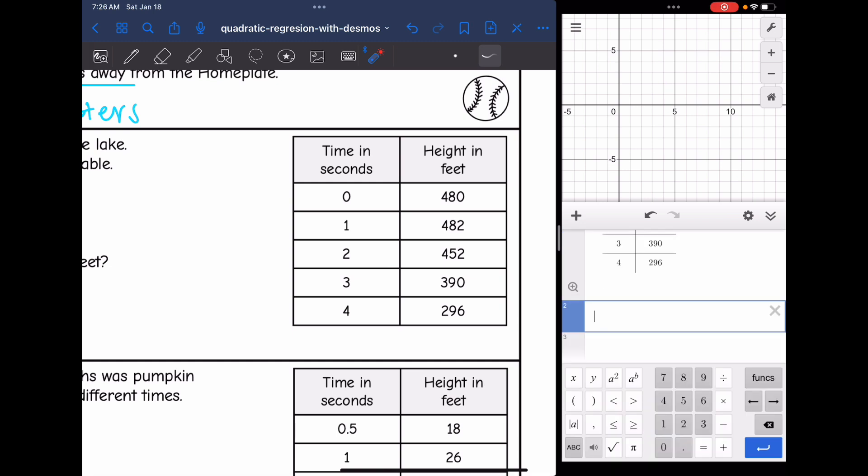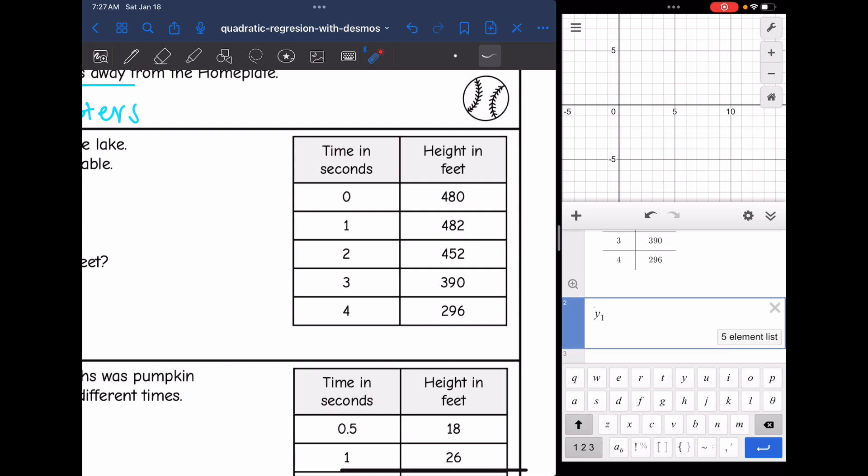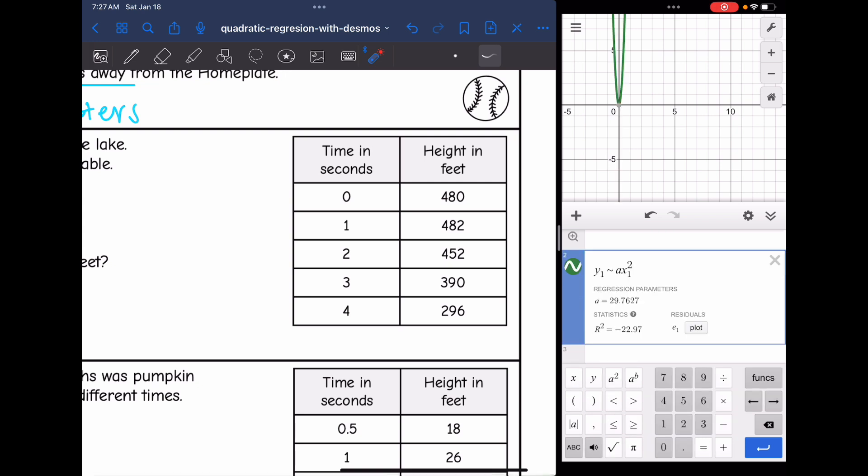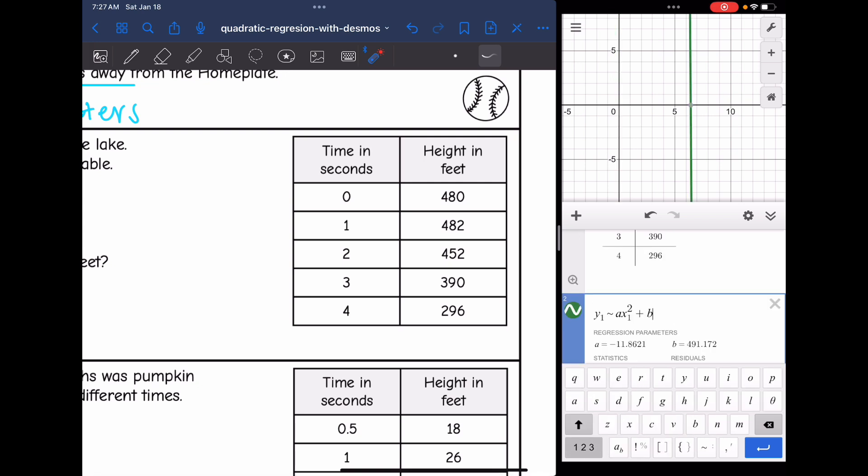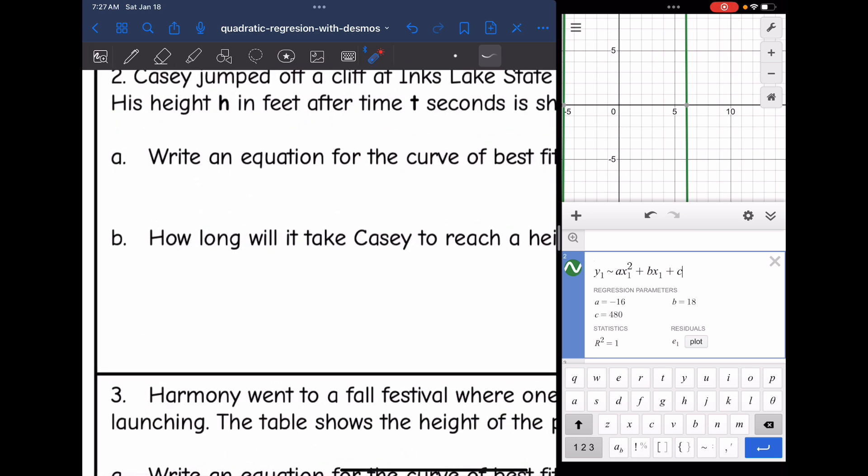Okay, now I'm ready to write my regression equation. My table is x1 and y1, so those are the variables I will use in my regression equation. Y1 is about a times x1 squared plus b times x1 plus c. And there are my a, b, and c values. So I can write my equation for the curve of best fit. It will be y equals negative 16x squared plus 18x plus 480.